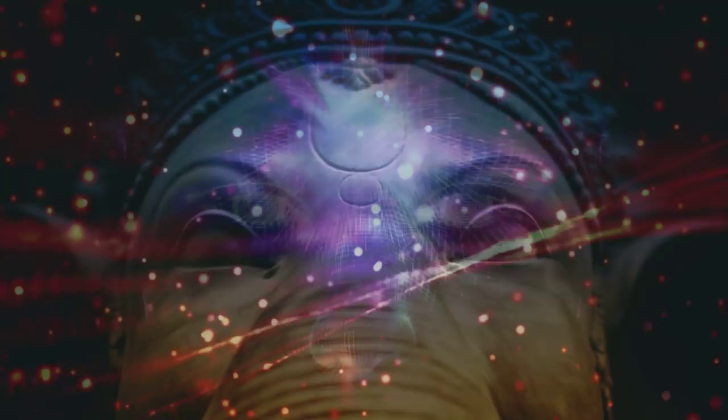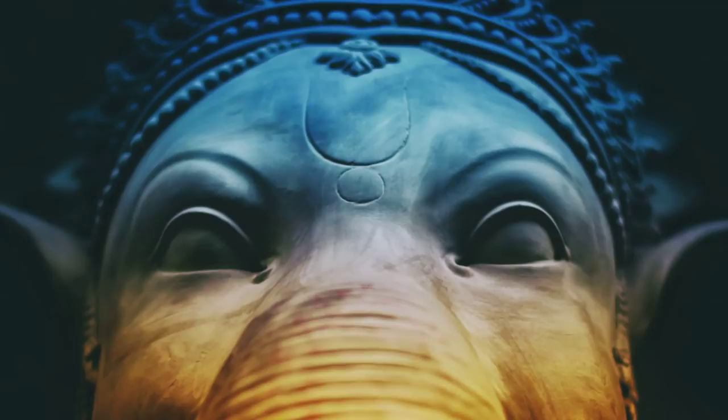In Hinduism, the third eye is said to be located around the middle of the forehead, slightly above the junction of the eyebrows.